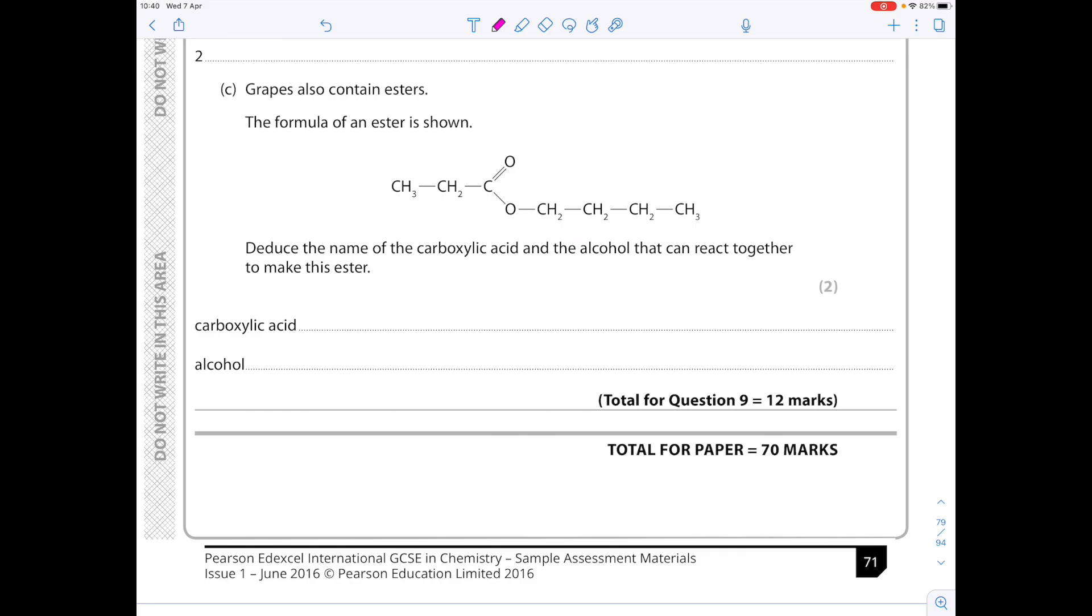Grapes also contain esters. The formula of an ester is shown. Deduce the name of the carboxylic acid and the alcohol that can react together to make this ester. So I know that this part of the molecule has come from the carboxylic acid. We have 3 carbon atoms. Monkeys eat peanut. So I know it's propanoic acid. In terms of the alcohol, we have 4 carbon atoms. Monkeys eat peanut butter. So it's butanol. But notice where that OH functional group is. It's on the first carbon. So it's actually butan-1-ol.